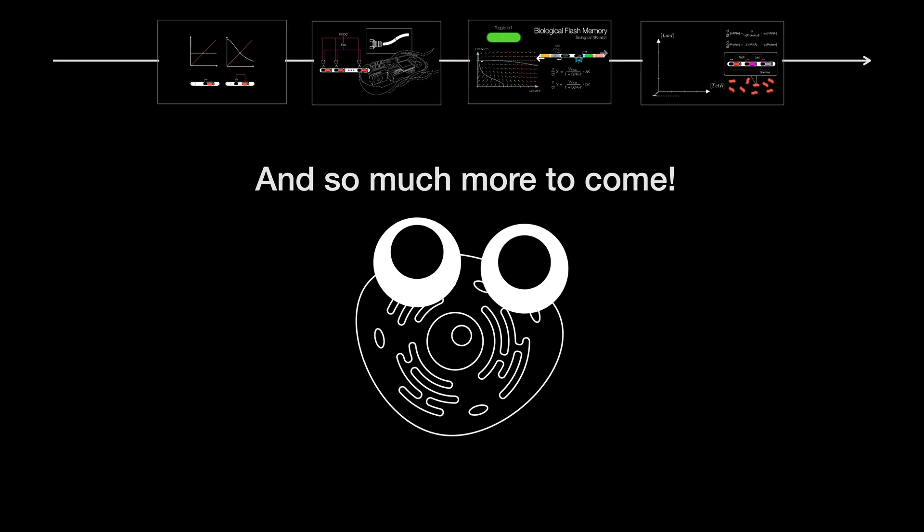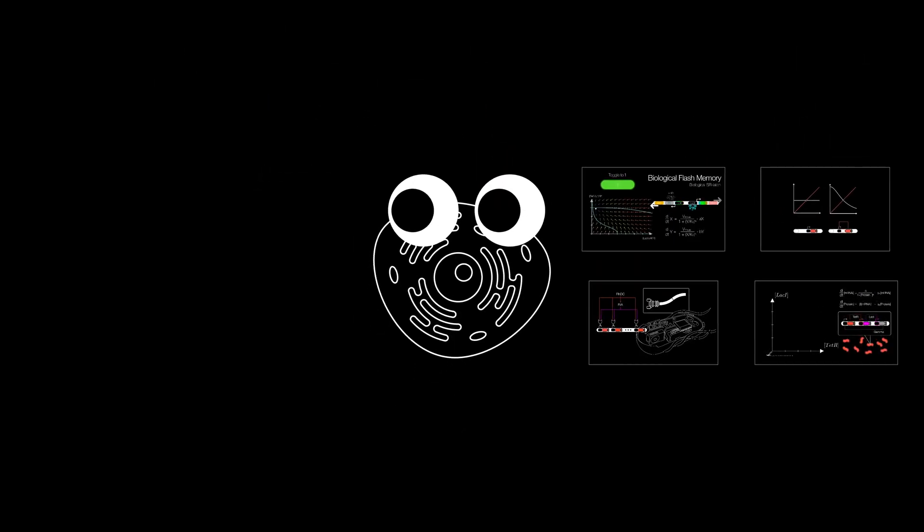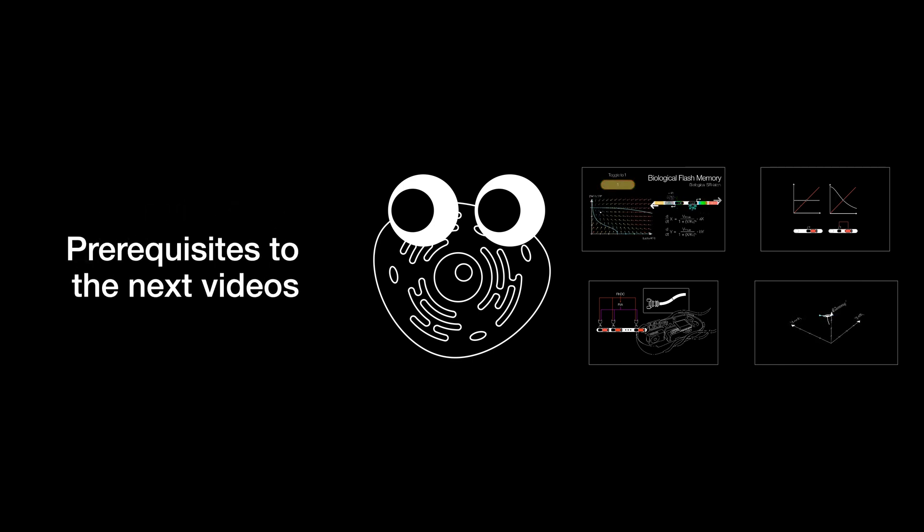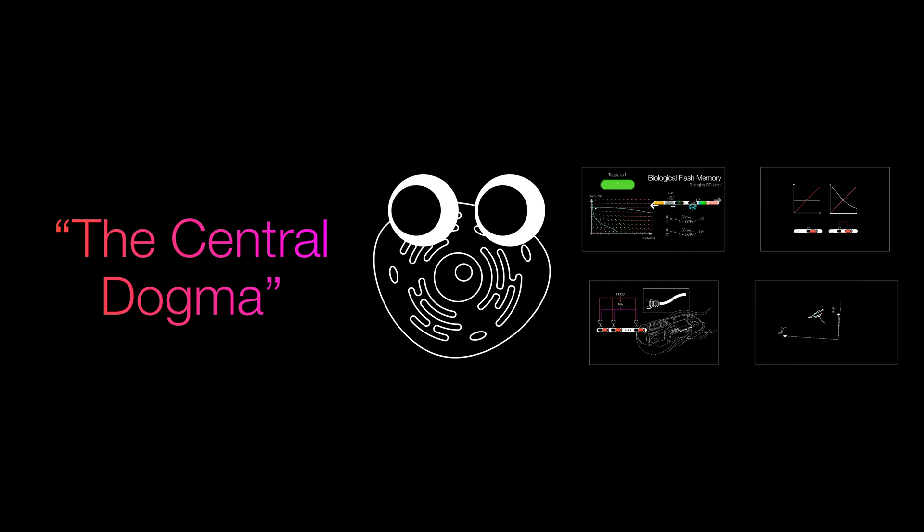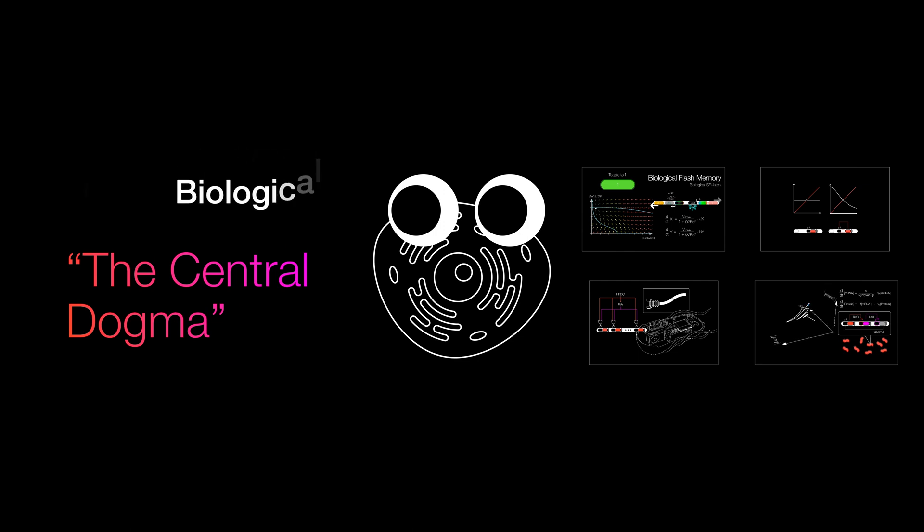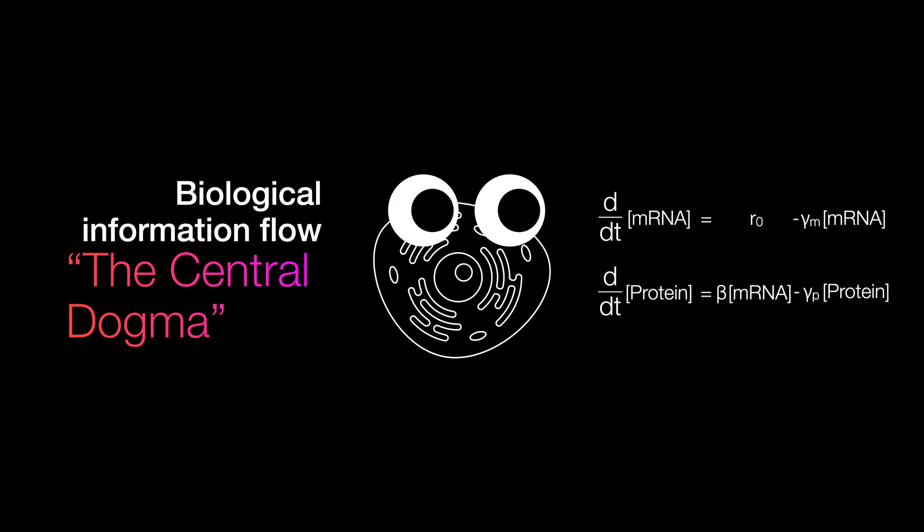But for today's episode, I will be tackling what I feel is the most important thing in order to understand the rest of this juicy, exciting stuff. Its importance is so much so that it's known as the central dogma of biology. And that's because it is the process that describes how information flows within living things. And not only that, I'll also be describing this whole process using mathematics by the end of this video. So without further ado, let's get started.